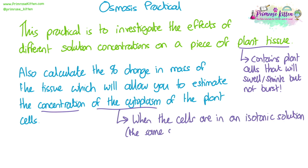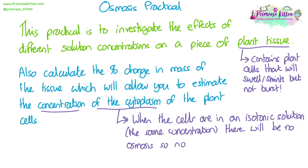This may sound complicated, but actually what we're just saying is that when the cells are in an isotonic solution — so when they're in a solution that's the same concentration as their cytoplasm — there's going to be no osmosis, no overall net movement of water into or out of the cells, so there should be no change in mass. So we're basically just looking for when there's no change in mass; that solution concentration will be a similar concentration to the cytoplasm of the plant cells.